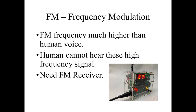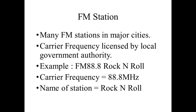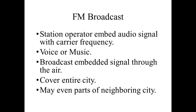Although FM signal is all around us, we will not be able to hear it without a FM receiver. Nowadays, there are many FM stations in every major city. Each station operates at a specific frequency licensed by local government authority — this is called the carrier frequency. For example, company A operates a rock and roll radio station on FM 88.8, meaning 88.8 MHz is the carrier frequency of this station. At the station, the operator will embed their audio signal, whether it may be voice or music, with the carrier frequency and broadcast through the air.